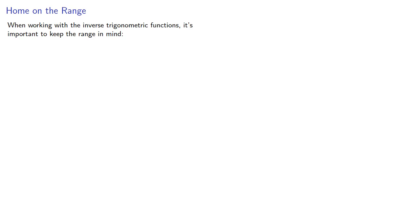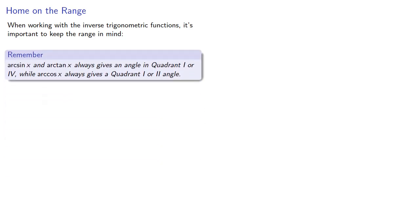When working with the inverse trigonometric functions, it's important to keep the range in mind. Remember arc sine and arctangent x always gives an angle in quadrant 1 or 4, while arc cosine x always gives a quadrant 1 or 2 angle.